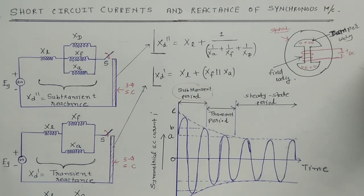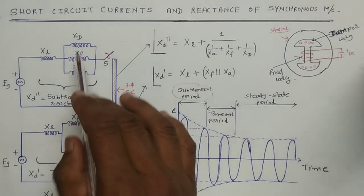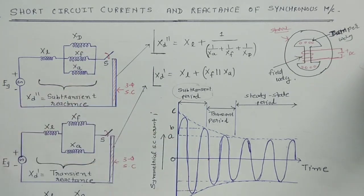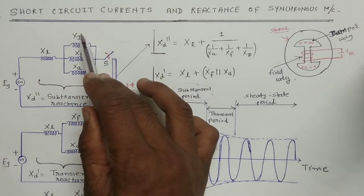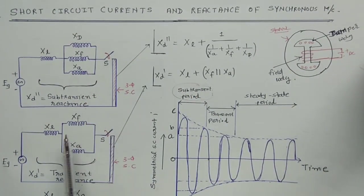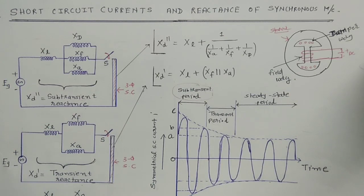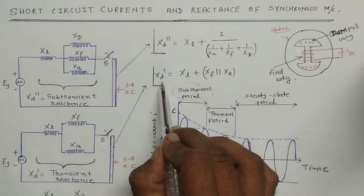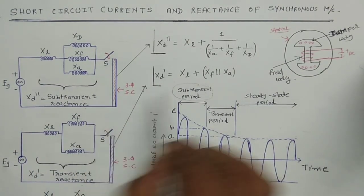After two or three cycles, the damper winding current reduces so that the damper winding becomes open circuit and XD becomes zero — the damper winding current has died out. Now the total reactance of the synchronous machine is XF and XA in parallel, connected in series with leakage reactance XL. This equivalent reactance is transient reactance XD dash, where XD dash equals XL plus XF and XA in parallel.